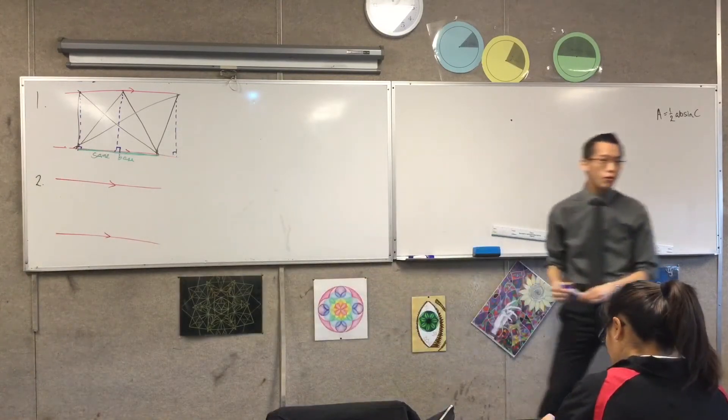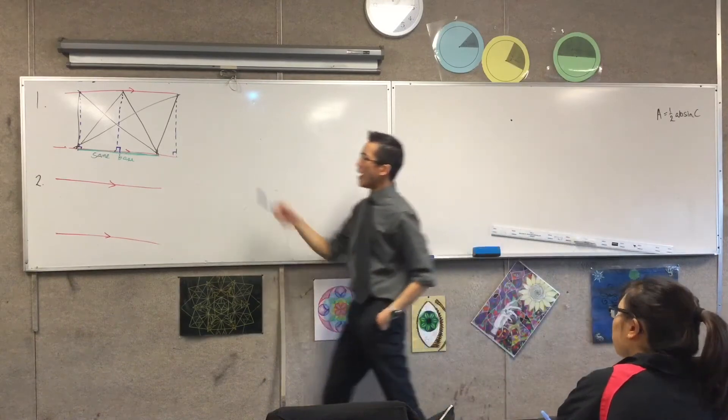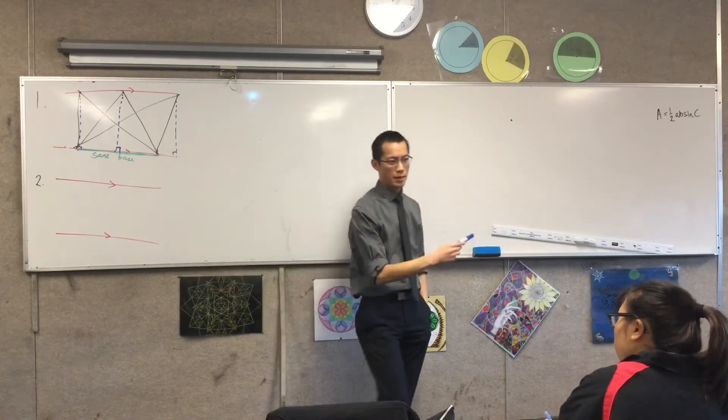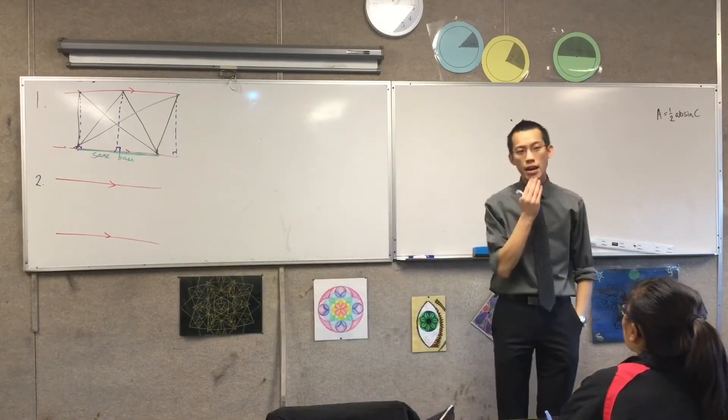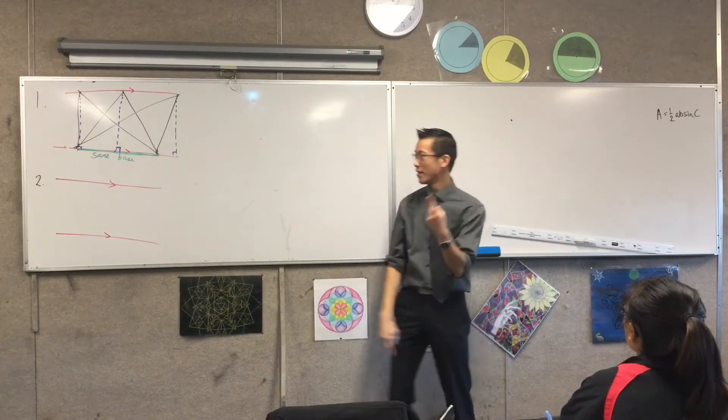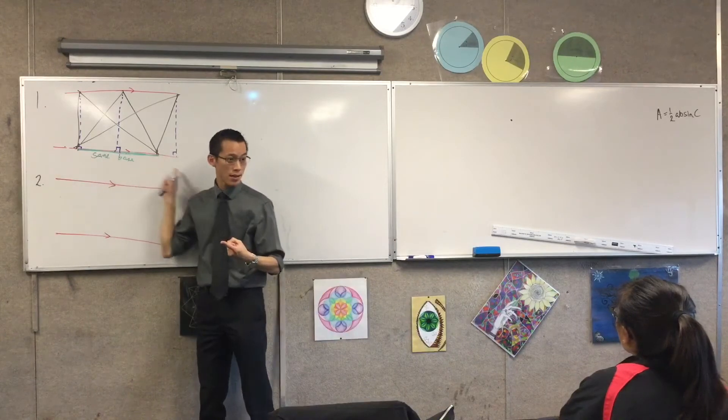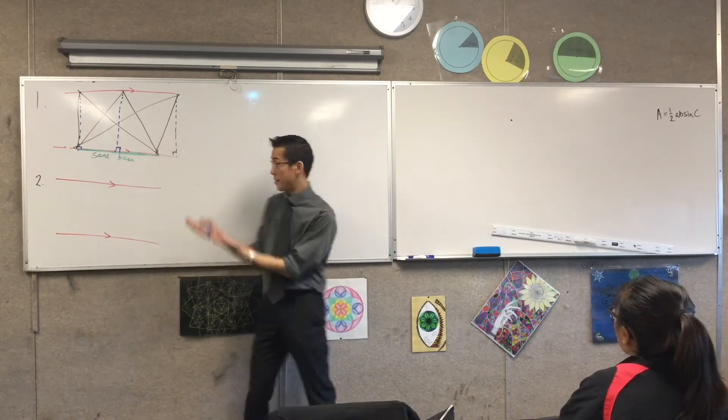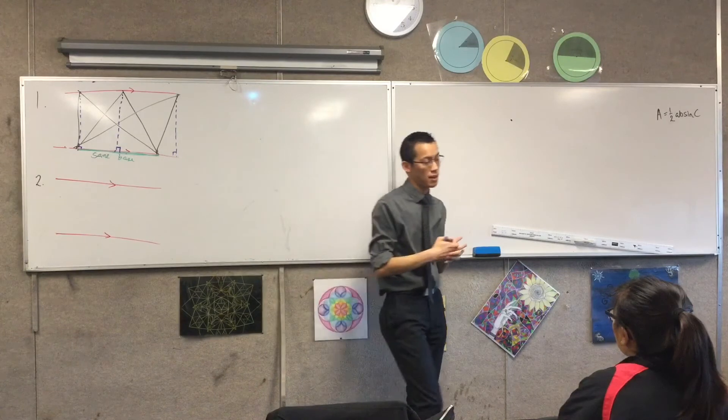Now, the reason why I've drawn all three is because now it kind of makes clear to you every one of these triangles, you remember at the beginning, I asked you, how do you work out the area of a triangle? Well, at the moment, you need two things. You need a base, and you can see these all have the same base, and you also need the perpendicular height, and these all have the same perpendicular height.